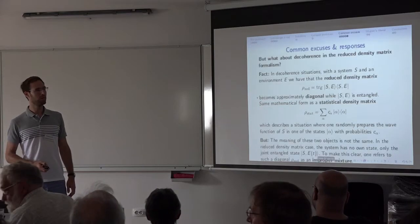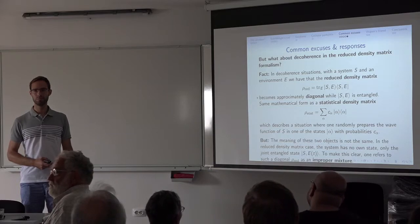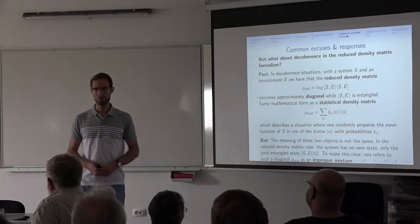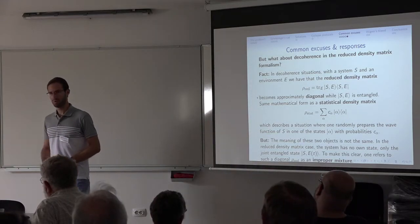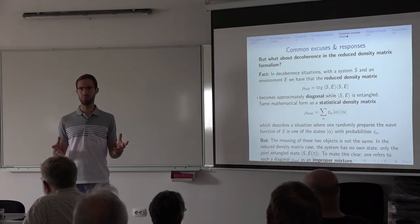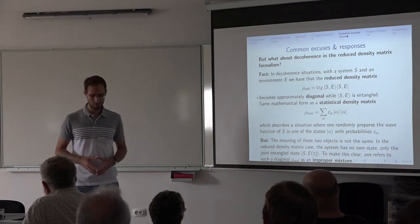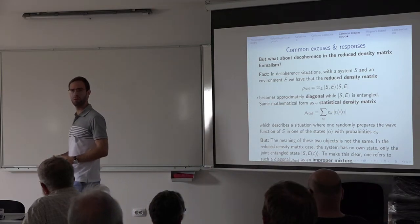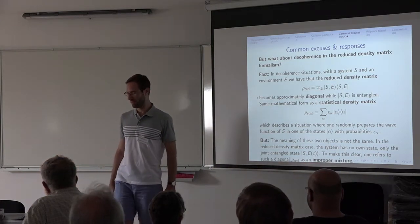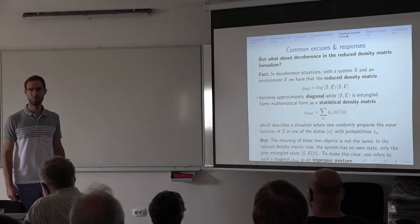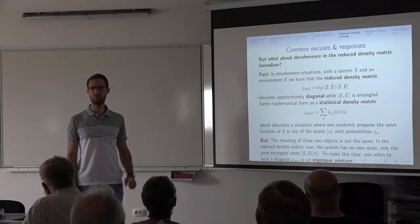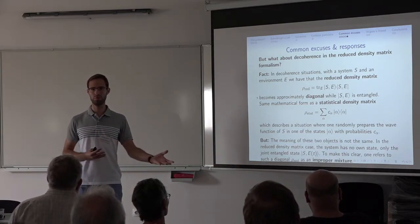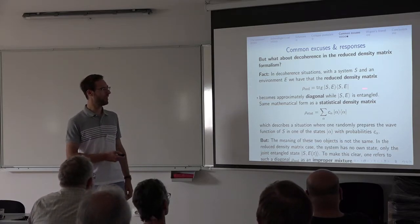Could you explain a bit more about the proper versus improper mixture distinction, since as mentioned there's no physical way to distinguish them? The physical situation is actually very distinct in these two cases. In the first case, you prepare one joint state of system and environment, and the reduced density matrix is what you get. In the other case, you randomly prepare the system in different states with certain probabilities. So it's a completely different physical thing, even if the mathematical form of the density matrix looks the same. Both the physical situation is different and the mathematical procedure used to derive the object are different. The reduced density matrix in the decoherence case is called an improper mixture, to distinguish it from the proper mixture.